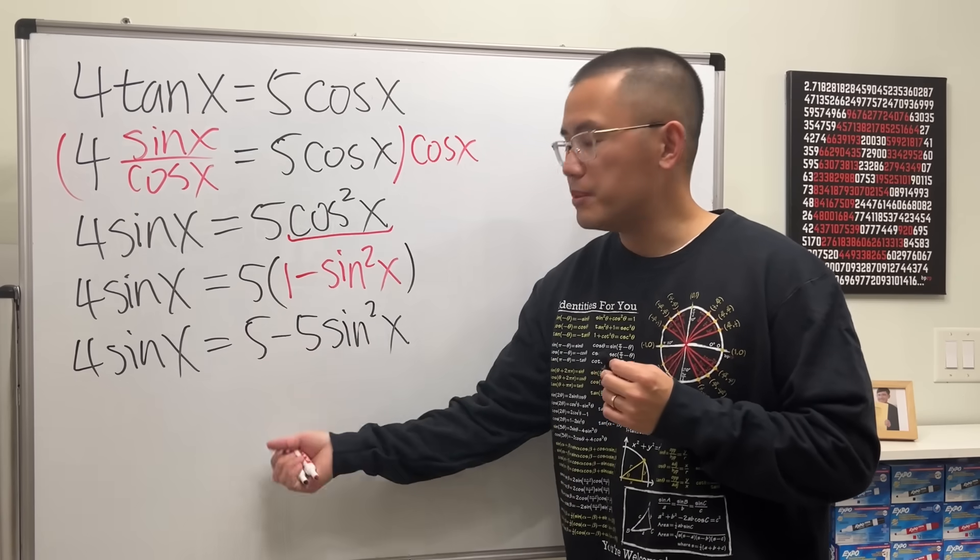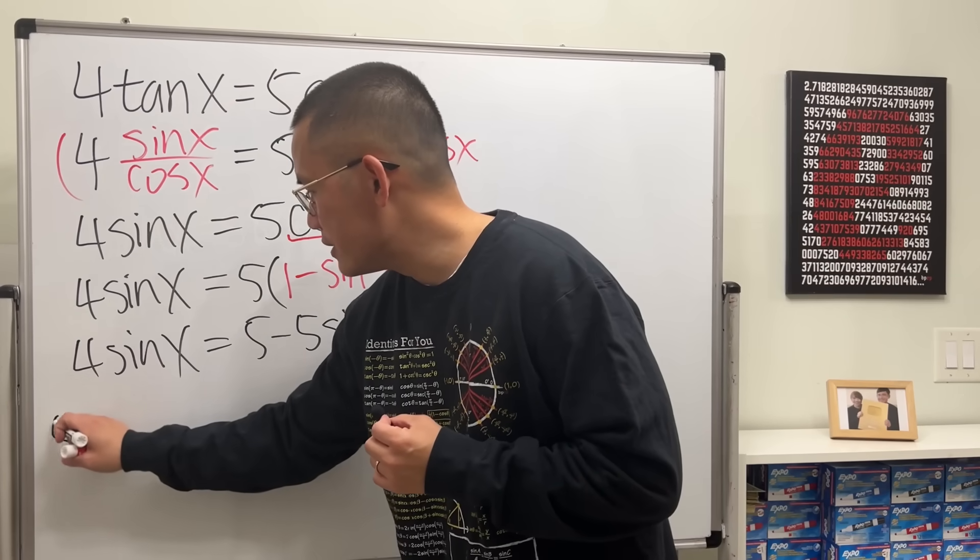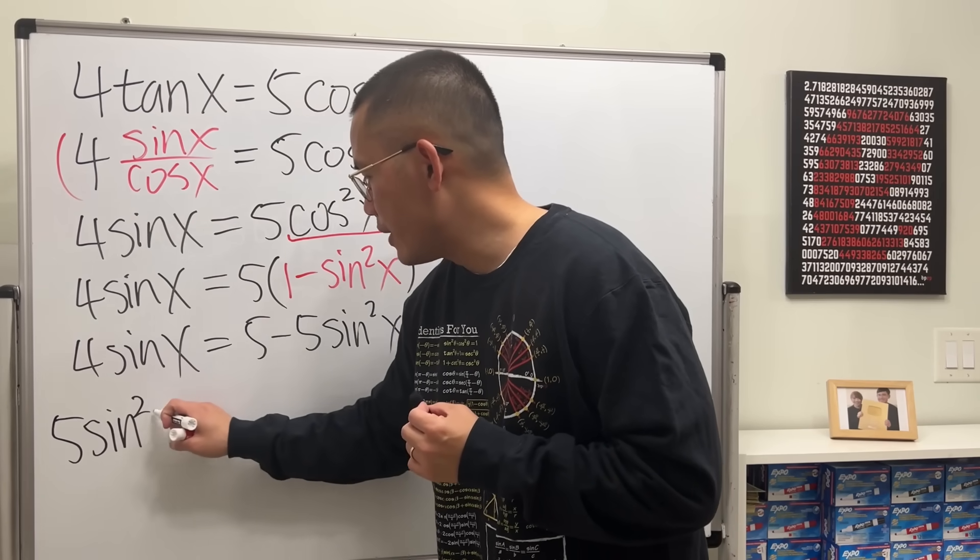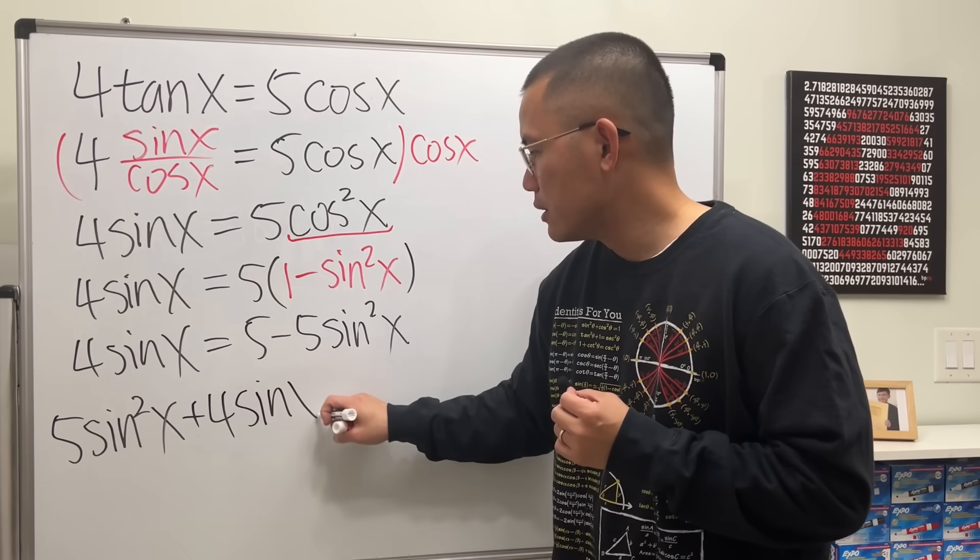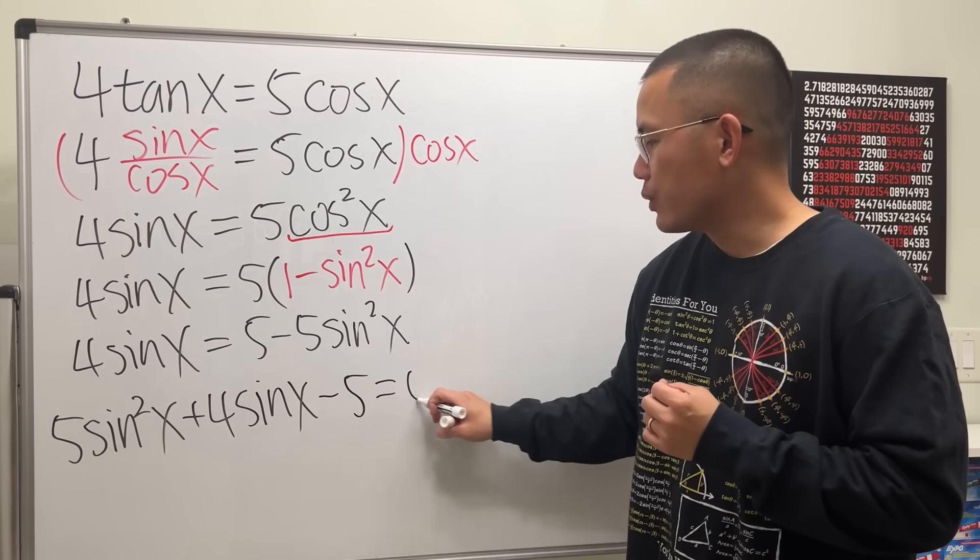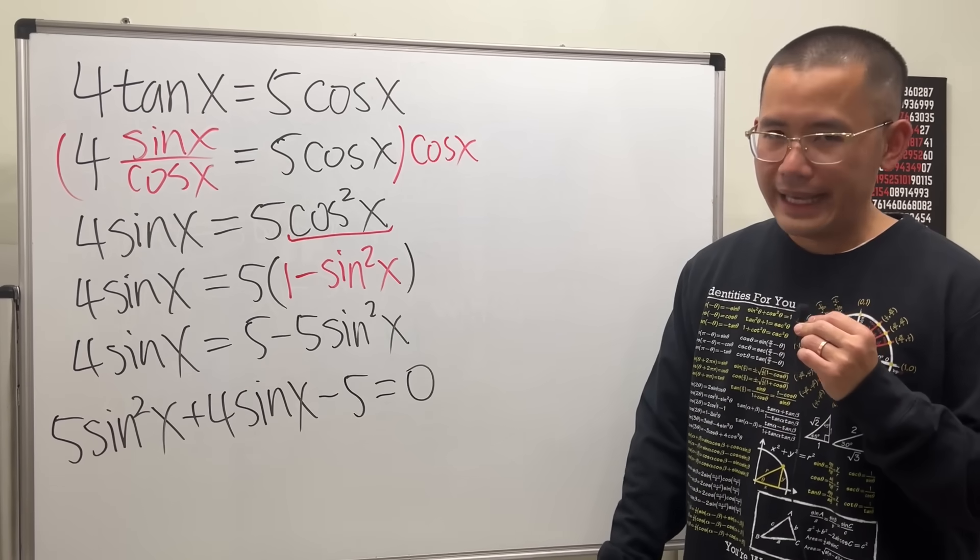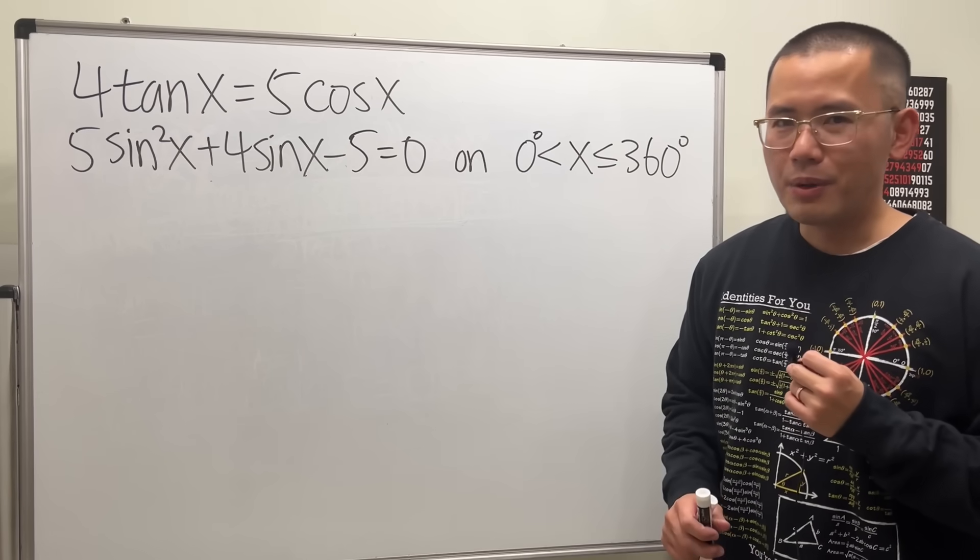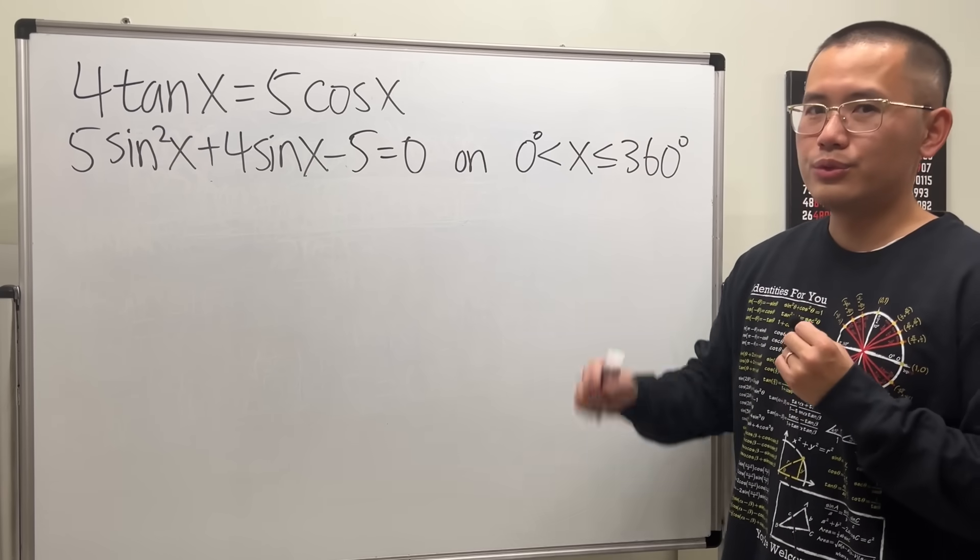And then I'm going to put these two terms to the other side. So put this to the other side, we get positive 5 sine squared x. And then this is positive 4 sine x already. And then bring that over, so we have the minus 5. That's equal to 0. And that's it. That's all you have to do for part A. Continue with part B.